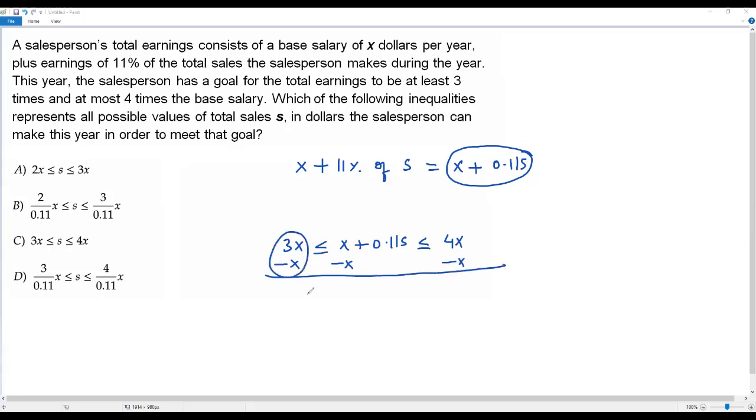When I do so, 3X minus X becomes 2X less than or equal to. The positive X minus X cancels out, leaving 0.11S less than or equal to. When I simplify this one, I get 3X.